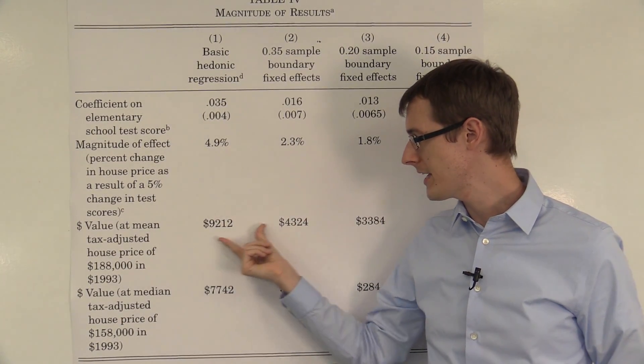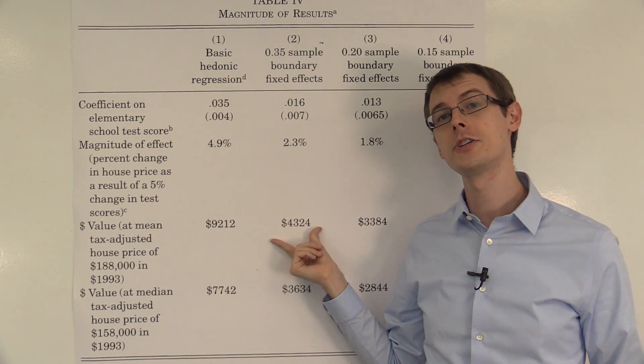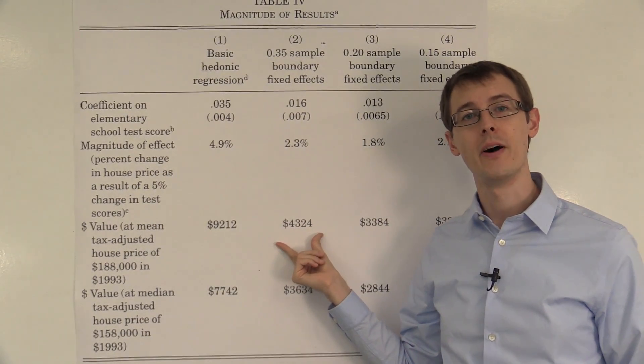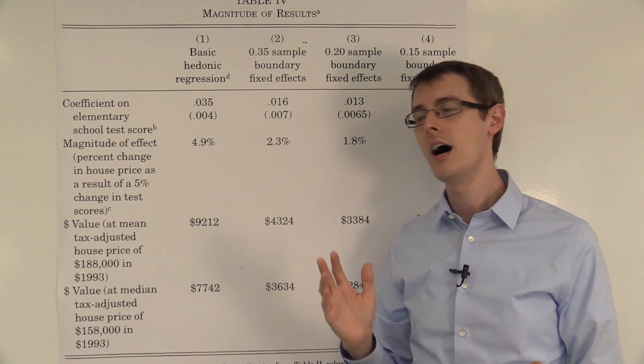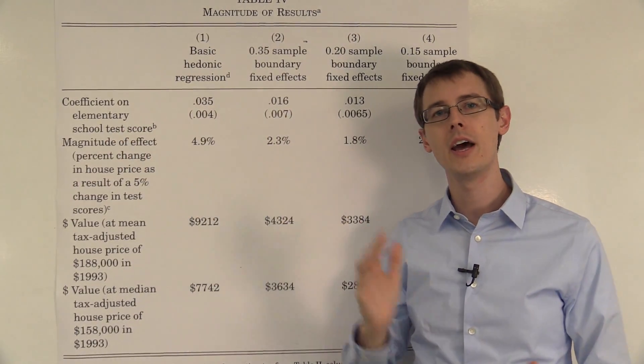And even though the estimate gets smaller, this is still quite a large number. So that's a pretty interesting finding. So that's the main results from this paper by Sandra Black on the effect of school test scores on house prices.